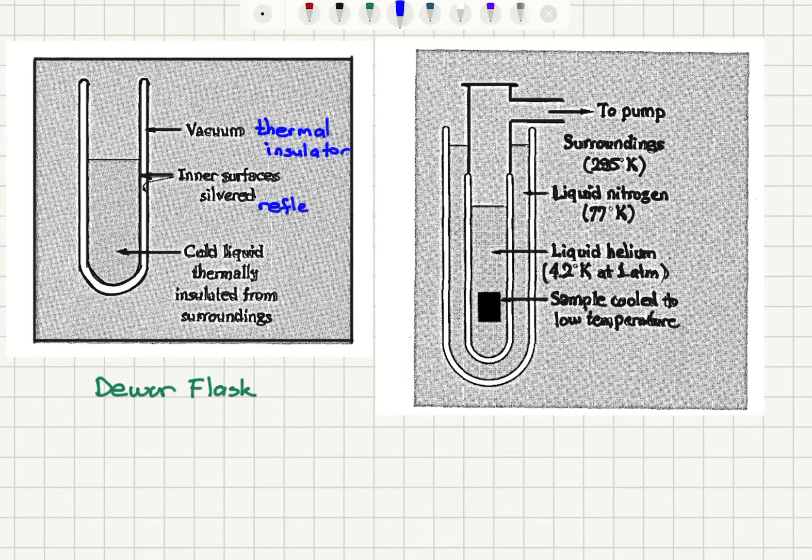The inner surfaces that are silvered will be reflectors. It will reflect the heat. And we have the cold liquid which is thermally isolated from the surroundings.